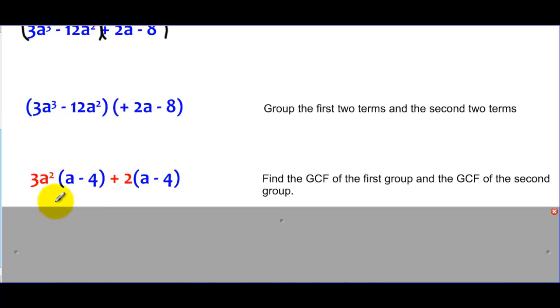Here's the big part of factoring by grouping. If you notice, the leftover expression after I pulled away the GCF is A minus four, and I got the exact same expression in the second one, and that has to be true for this to factor.